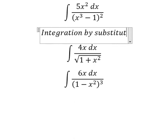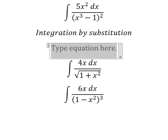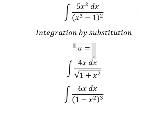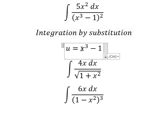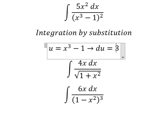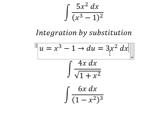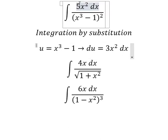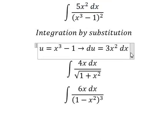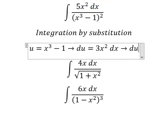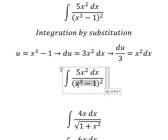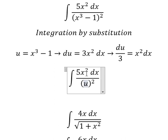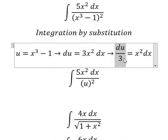We use integration by substitution, so I will put u equals to this one. We do the first derivative for both sides and we have 3s squared dx. Because we don't have the number three in here, so we divide both sides by number three.